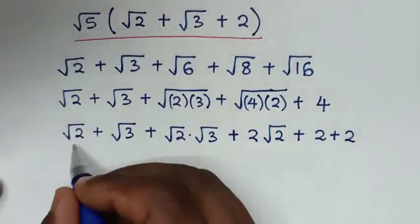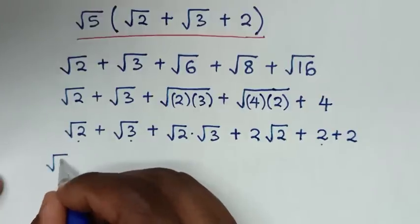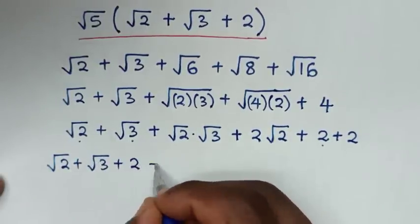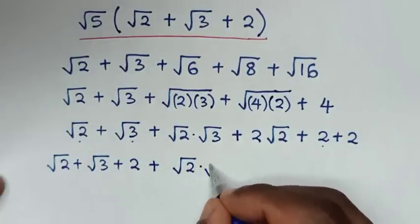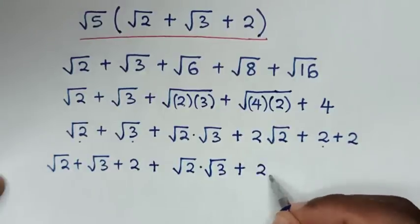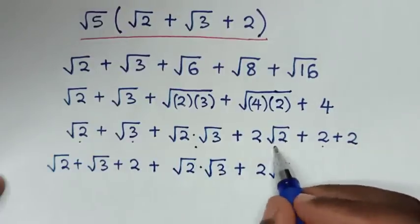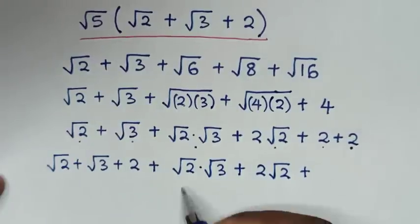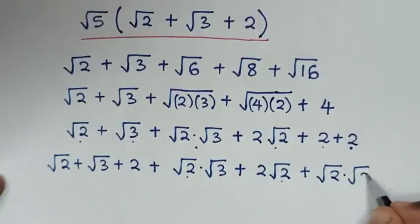In the next step, we take square root of 2 plus square root of 2, plus square root of 2 times square root of 3, plus 2 times square root of 2, plus 2. To have a common square root of 2, we write 2 as square root of 2 times square root of 2.